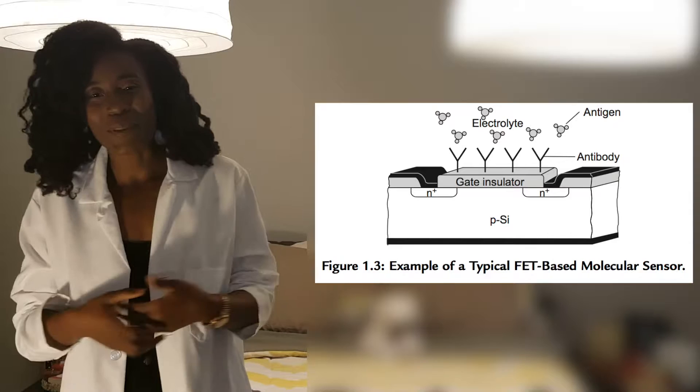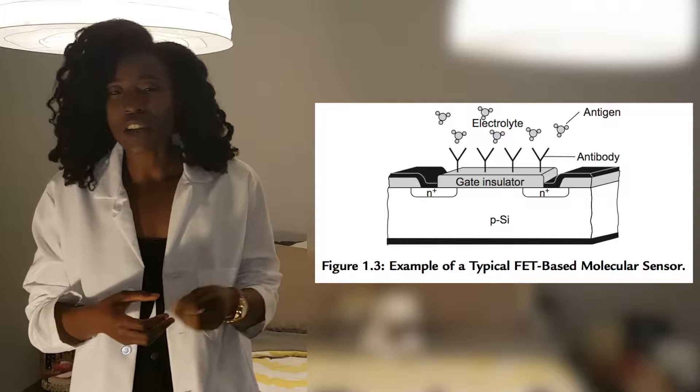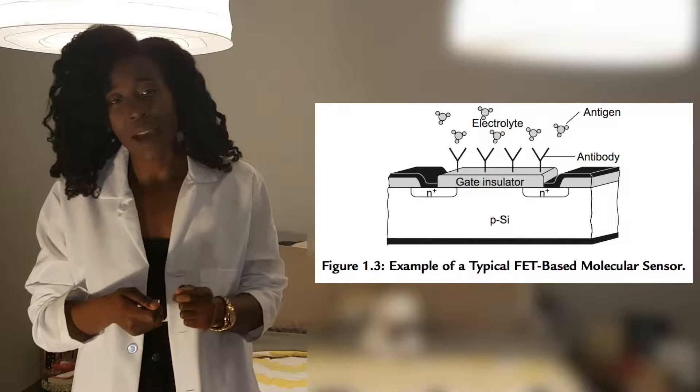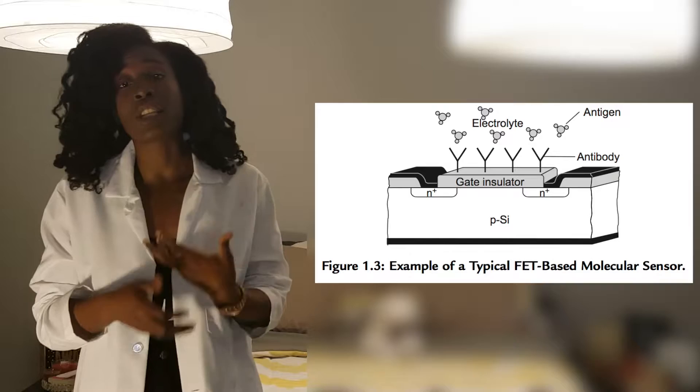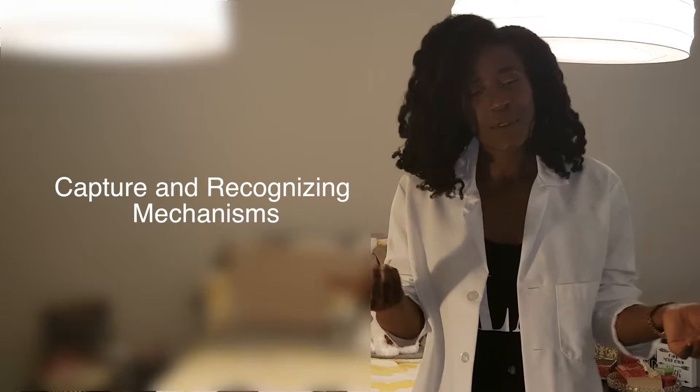The second example the book talks about is the immuno sensor. This sensor detects the changes in charges produced by the sensing effect when the antigen molecules bind to the antibody proteins on the gate insulator of the sensor.